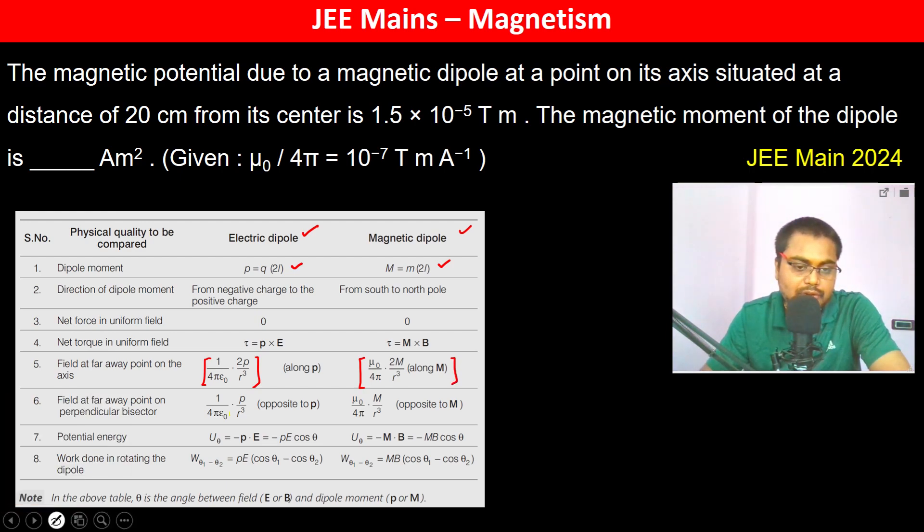At all places, the k which is 1 by 4π epsilon₀ gets replaced by μ₀ by 4π in case of magnetic, and the p gets replaced by m.